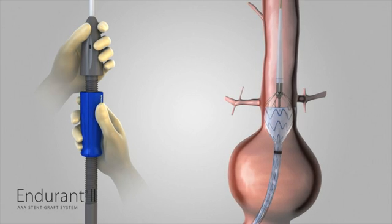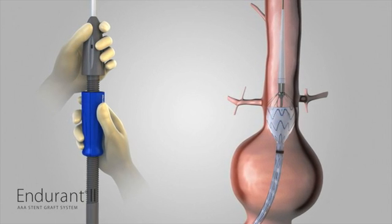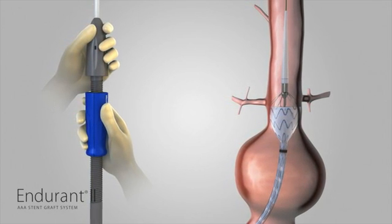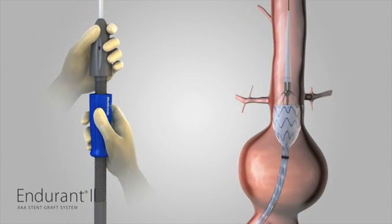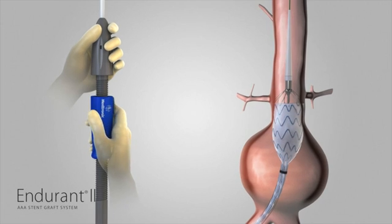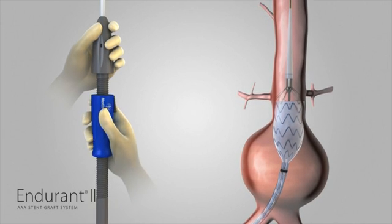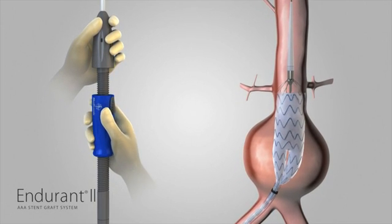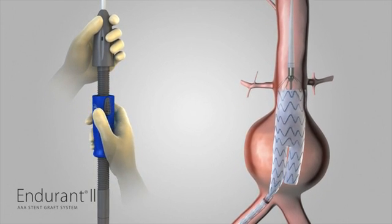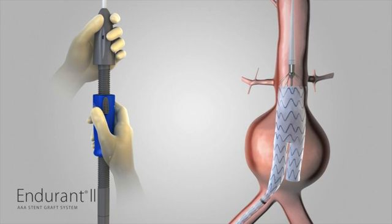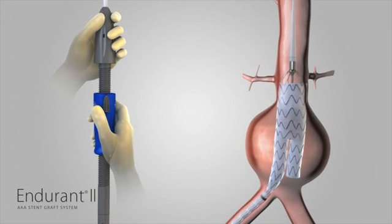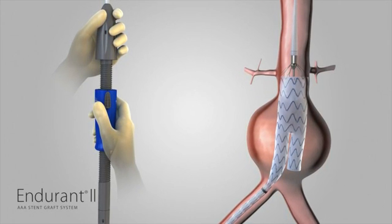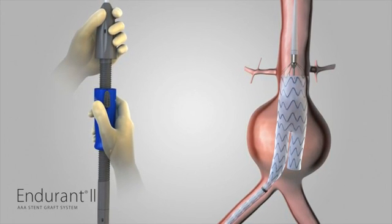While continuing to hold the delivery system stationary, slowly rotate the slider counterclockwise until the graft cover is withdrawn to the point that the contralateral stub leg is released from the delivery sheath. Use angiography to verify the position of the bifurcated stent graft in relation to the renal arteries.